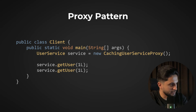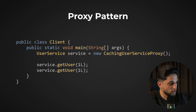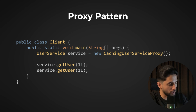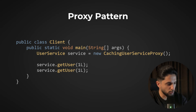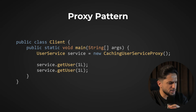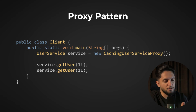When you call service.getUser with the same ID twice, the second time the data comes from the cache, not the actual database. The client doesn't know it's talking to a proxy — it looks identical to the real service. Especially if the service is injected as a dependency, there is no way for the class to know if it's talking to the proxy or the real object.